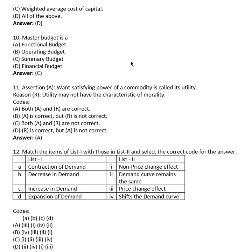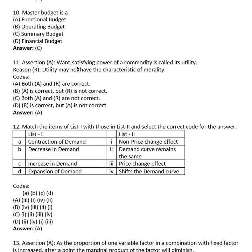Question 9: A master budget is a functional budget, operating budget, summary budget, or financial budget? The answer is (C), a summary budget.